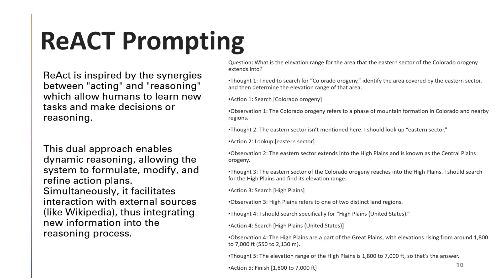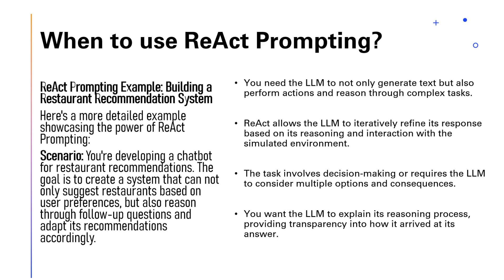ReAct prompting is inspired by the synergies between acting and reasoning, which allow humans to learn new tasks and make decisions. This dual approach enables dynamic reasoning, allowing the system to formulate, modify, and refine action plans. Simultaneously, it facilitates interaction with external sources like Wikipedia, integrating new information into the reasoning process. ReAct allows models to not only generate responses but also take actions based on those responses, enabling more dynamic and interactive conversations that make the model's behavior more adaptive and contextually relevant.